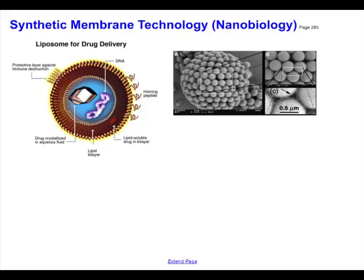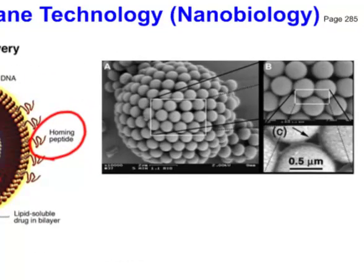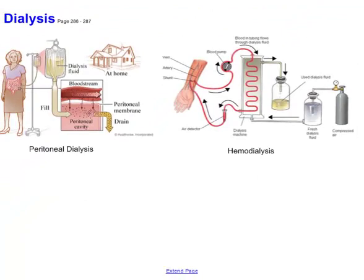This has led to fascinating technologies called nanobiology, where we're developing synthetic membranes. We take a phospholipid bilayer arranged into a small sphere, place the drug we want to deliver inside, and put homing peptides or proteins on the surface so they bond with your cells. This is one way we envision delivering custom-made drugs to specific cells. You can see electron micrograph pictures of what these nanobiology balls look like.